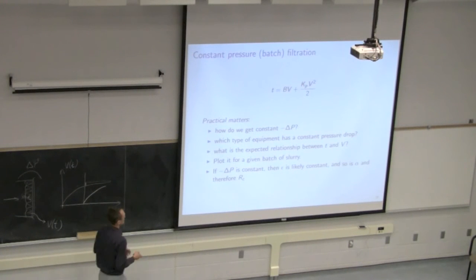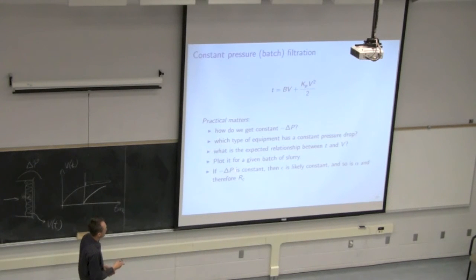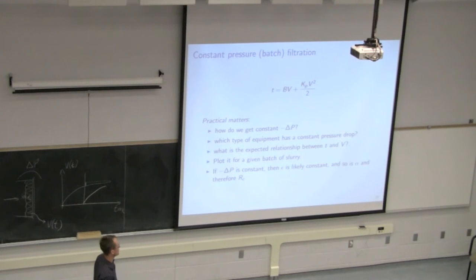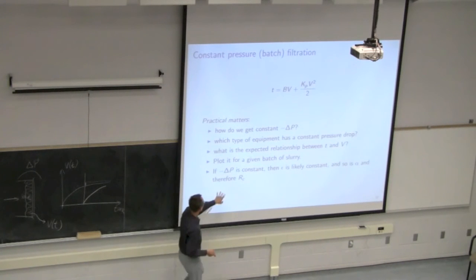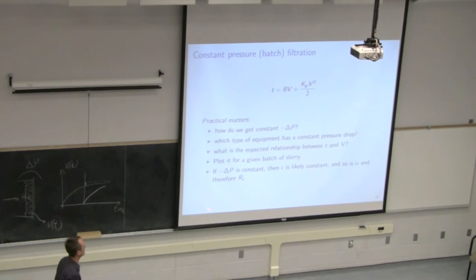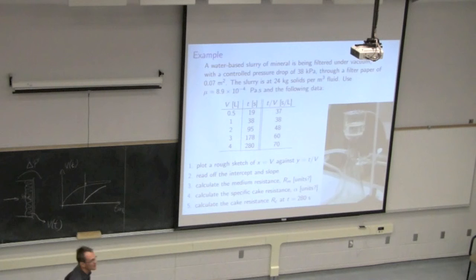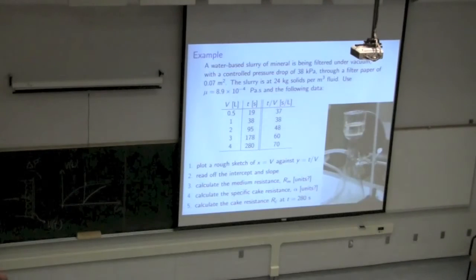We've looked at the relationship between T and V and plotted it. When operating at constant pressure drop, the packing void fraction is constant, so alpha is also constant. Note that RC is not constant — the cake thickness builds up, so RC goes up and up — while alpha itself remains constant. So epsilon is constant, and so is alpha. Here's how we approach this system.